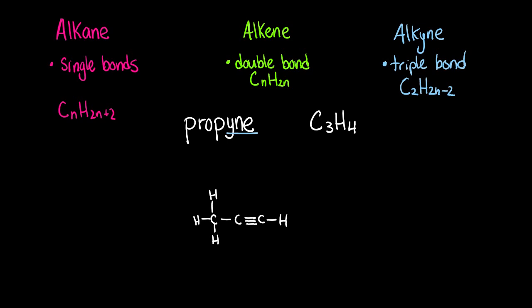The suffix yne means that there's a triple bond, and the formula is changed once again to C3H4. We double 3 to 6, minus 2, and we get 4, which is in accordance to the formula for propyne.